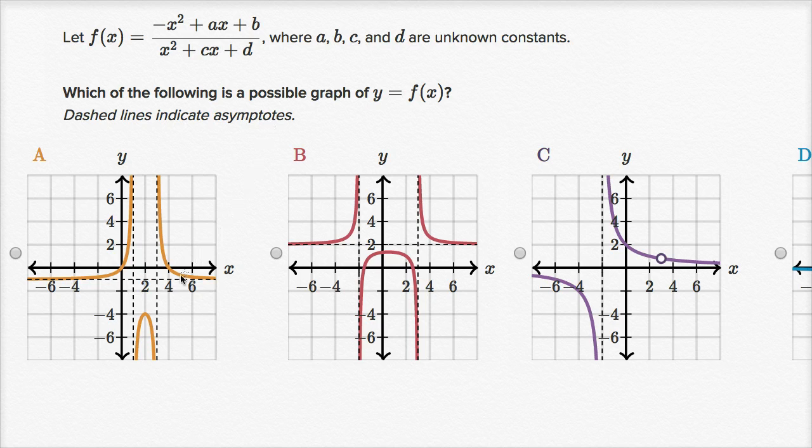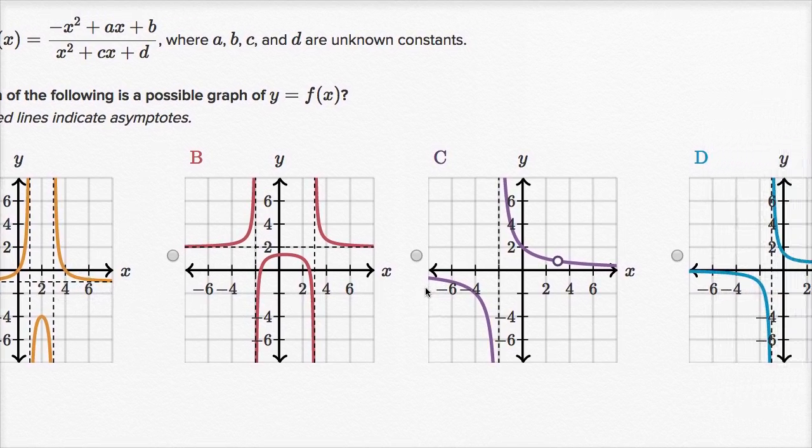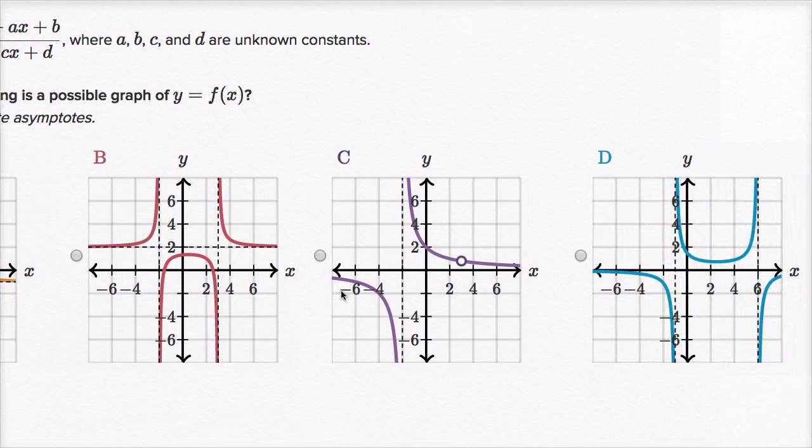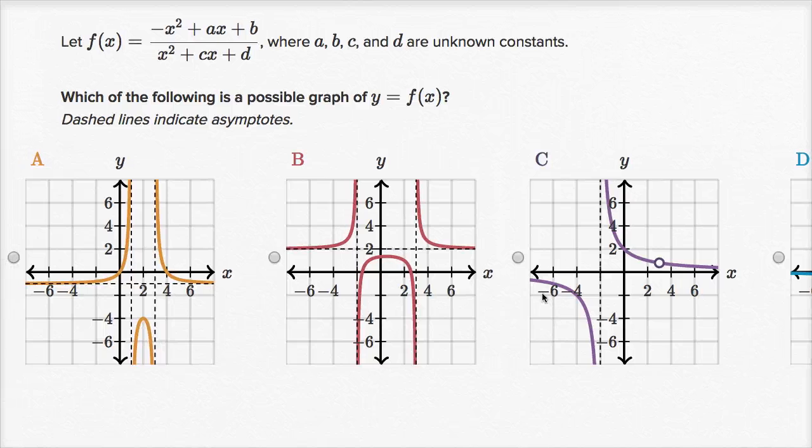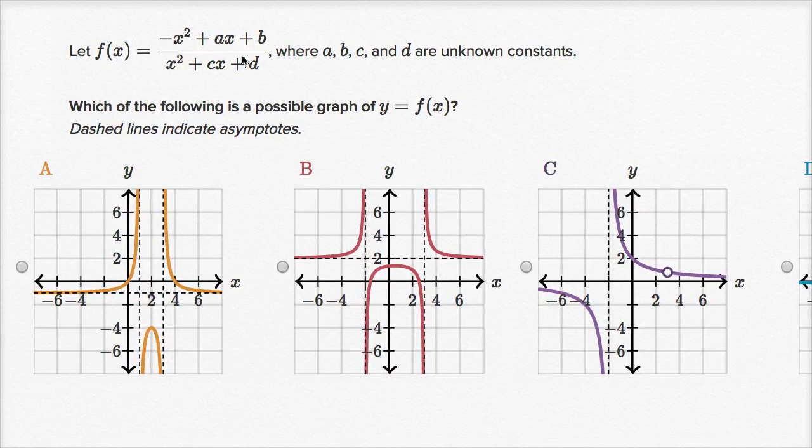So this is really interesting here. They gave us four choices. We see three of them right now, then if I scroll over you can see choice D. I encourage you to pause the video and think about how we can figure it out, because they haven't given us what these coefficients or constants are going to be.